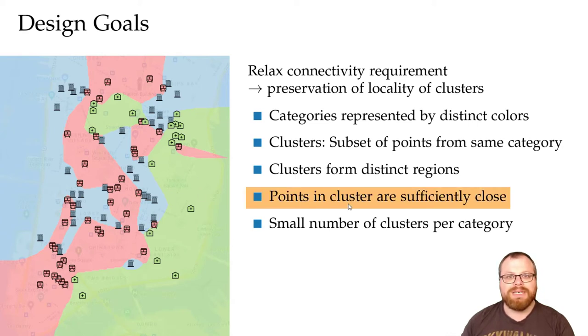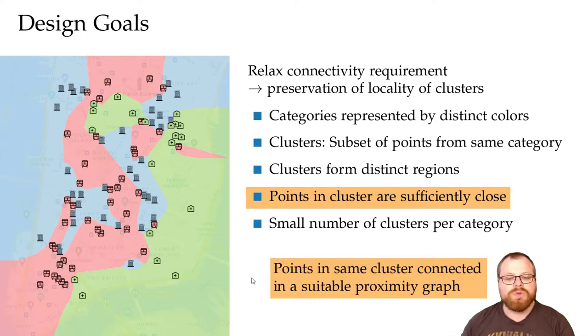The question is, what do we mean with sufficiently close? If we have denser parts of the map, then we don't want to have the same metric that decides which points are close than if we have not so dense parts. So instead of looking at the Euclidean distance, we use a suitable proximity graph to define which points are close.